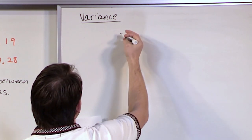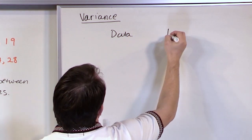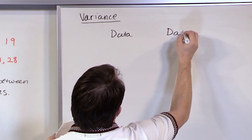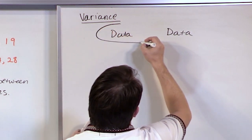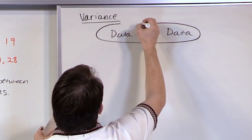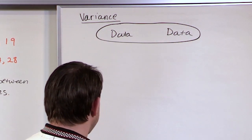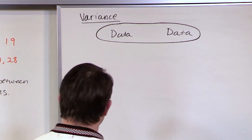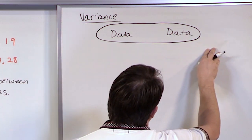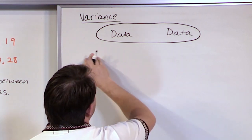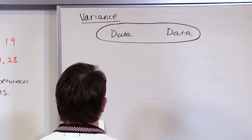Let's say that you have some data set — I'm just kind of drawing a picture here. This could be a list of numbers: the height of people in a room, the age of people. Usually it's numerical data, so think of it as the ages of people in a room or something like that.